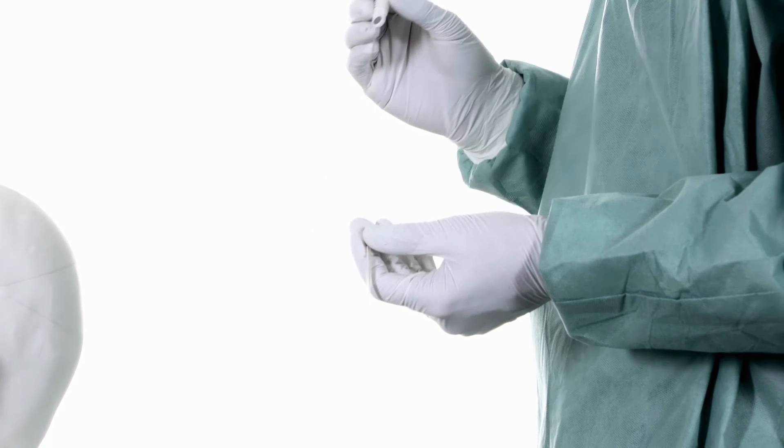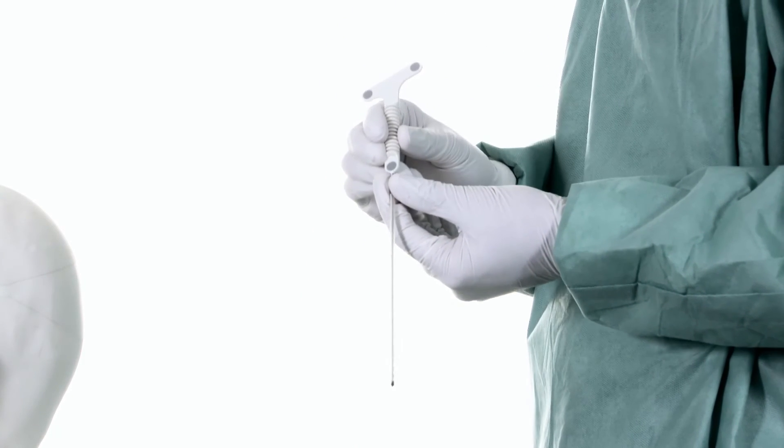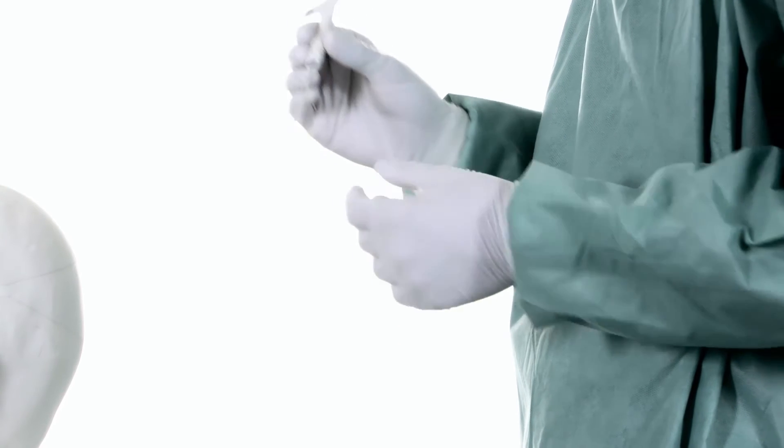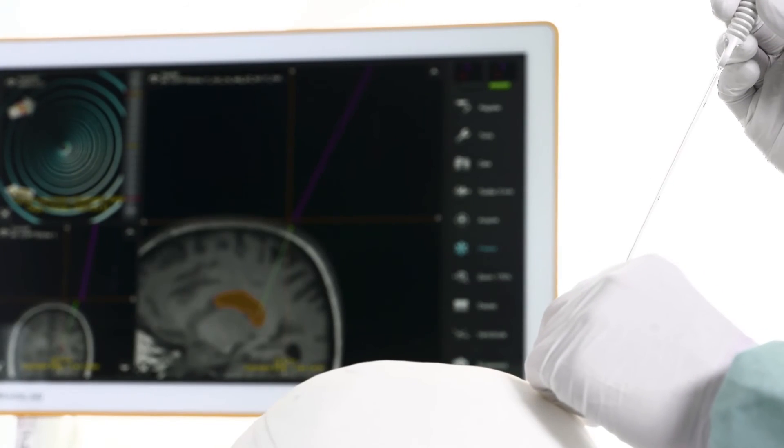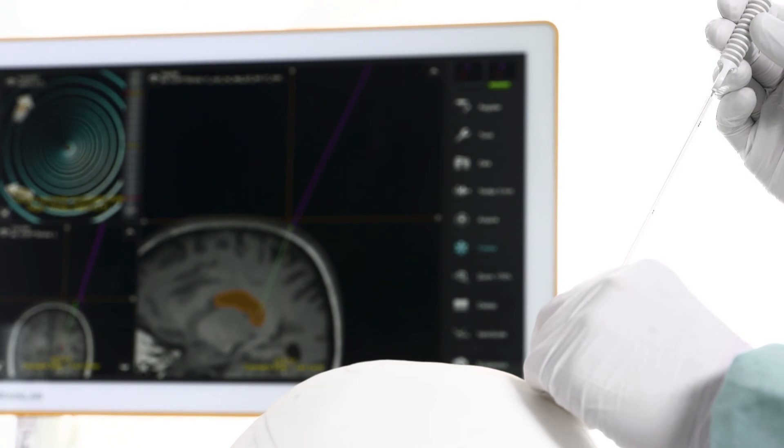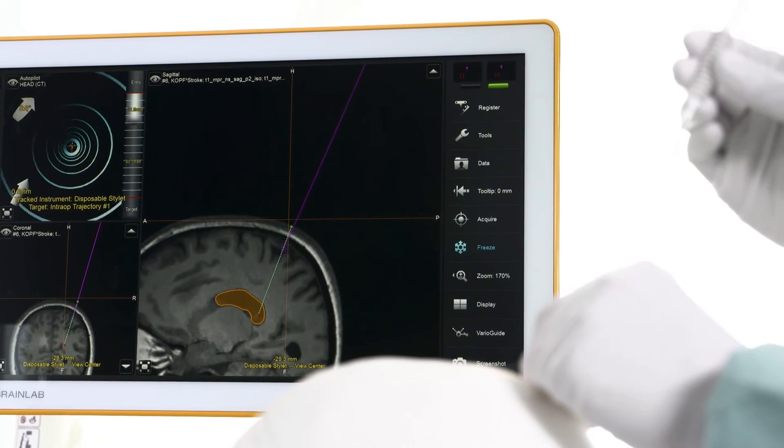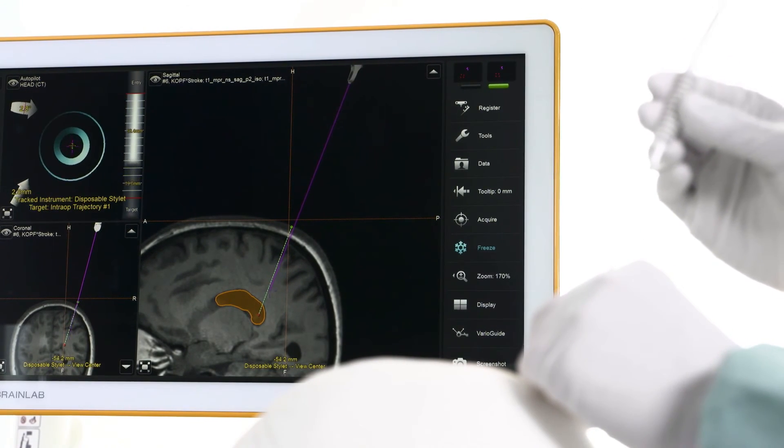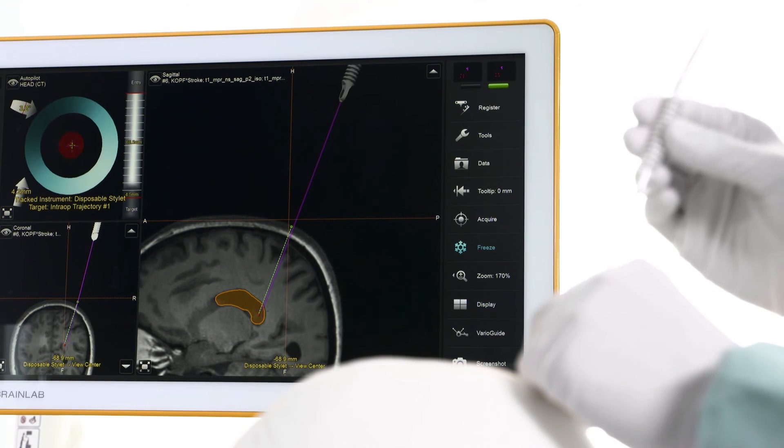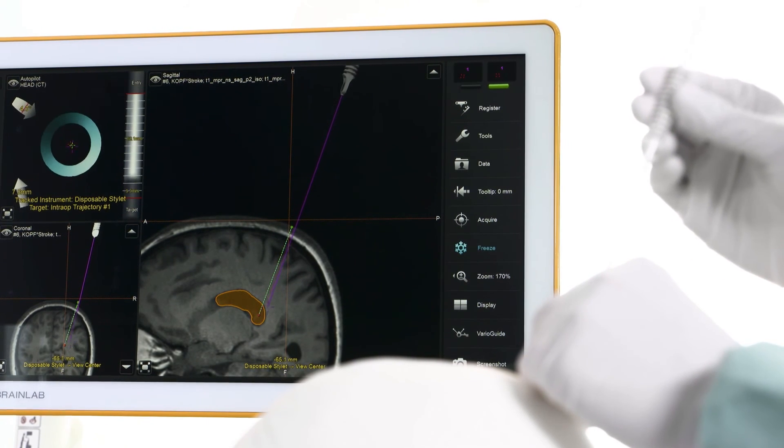Flexible compatibility allows for use of third-party, non-BrainLab shunts and ventricular catheters. After inserting the disposable stylet into the catheter, surgeons can direct both devices to the targeted ventricle along the planned trajectory according to the stylet position displayed on the navigation screen.